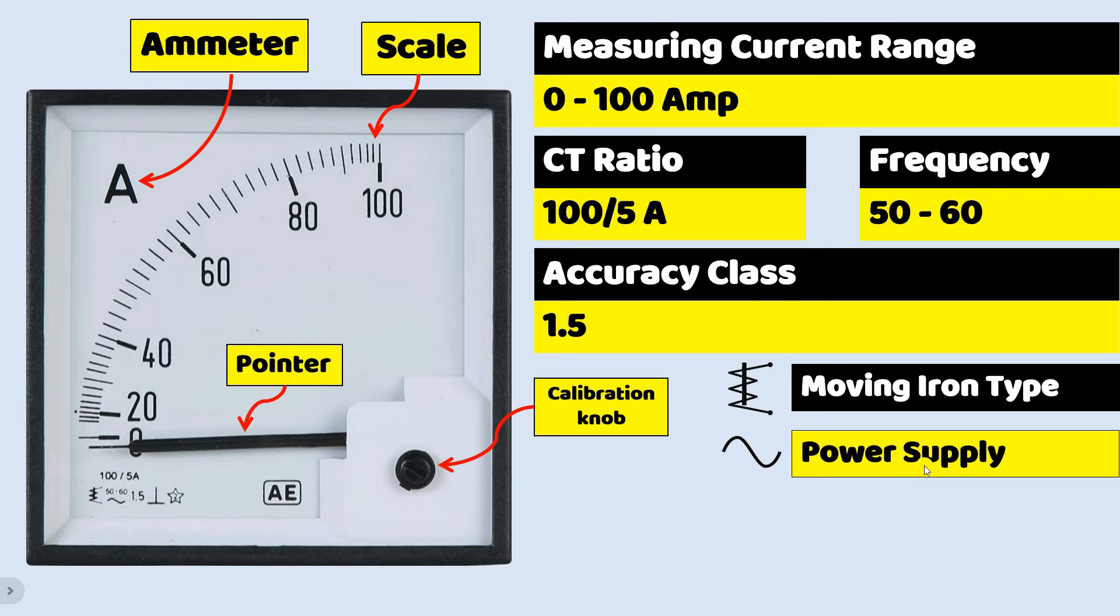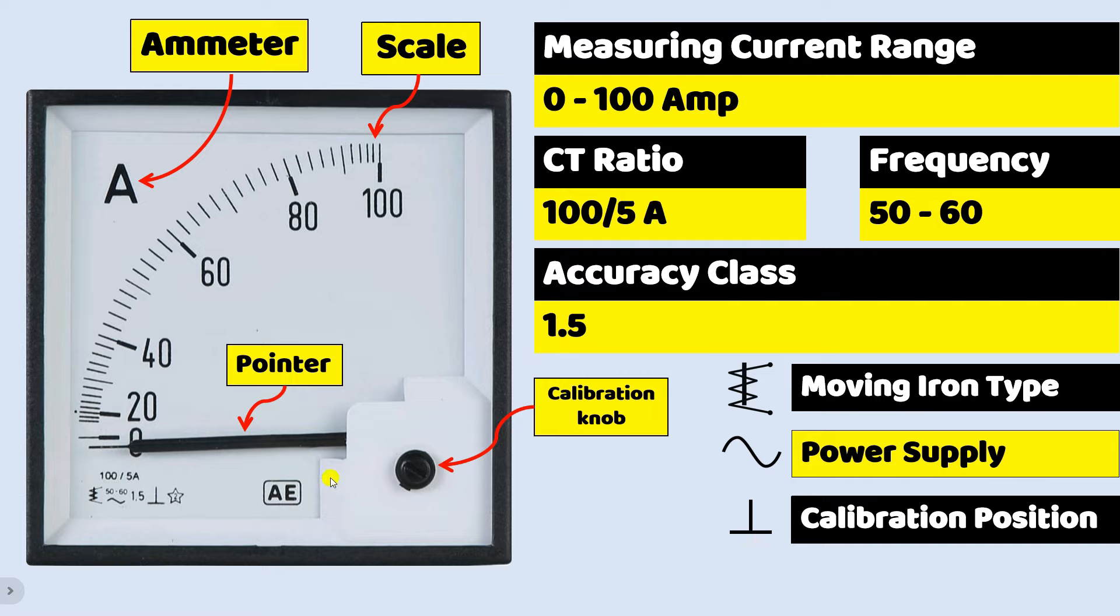Apart from this, you can see this upside down T. It means which position is used to calibrate this ammeter, or how to position this ammeter when you do calibration. Many people say how to mount this ammeter. All the three things are correct.